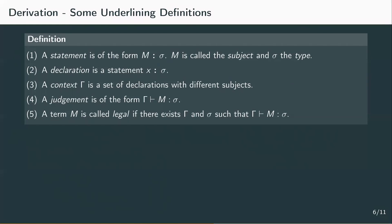With these constructs, we can form a judgement, which will be the way to formulate propositions, premises, and conclusions. A judgement reads as 'gamma yields m of type sigma', and it tells us: if we have the context gamma with free variables typed accordingly, then m has type sigma. Now, if a term m can be found in a judgement — so if there's a context gamma and a type sigma such that m has type sigma under context gamma — we call such a term legal. The set of simply typed lambda terms are exactly the legal pre-typed terms; we'll also call these typeable.